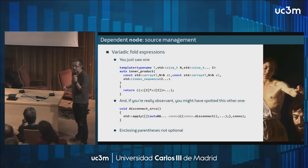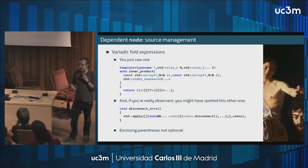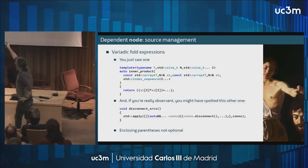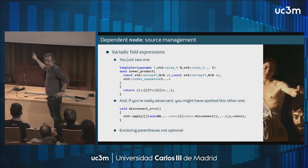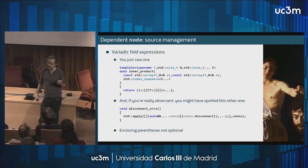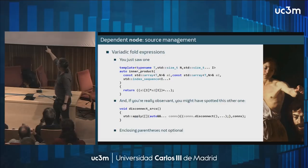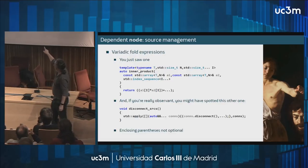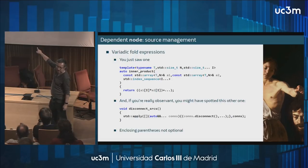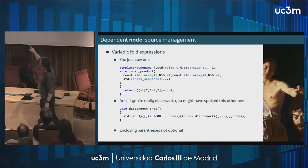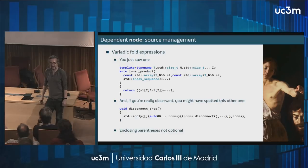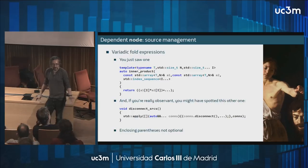Another thing I wanted to talk about is variadic fold expressions, a new feature in C++17. You can see 'plus times ...' — that's a variadic fold expression. In the disconnect-sources function I'm also using one: a comma fold expression. Applying something to each element of a pack used to require crazy metaprogramming before C++17. Now it's reasonably easy. The enclosing parentheses are not optional — the compiler requires them.